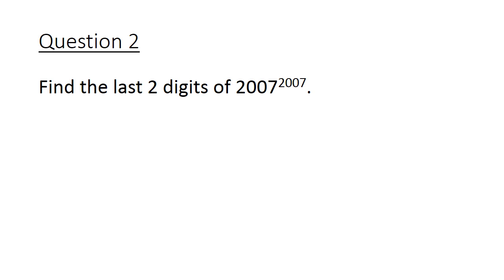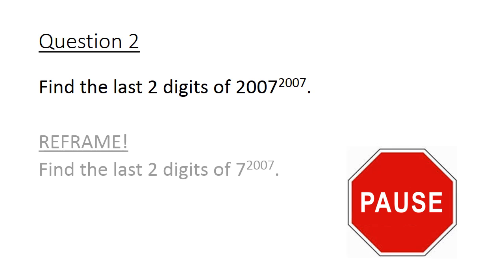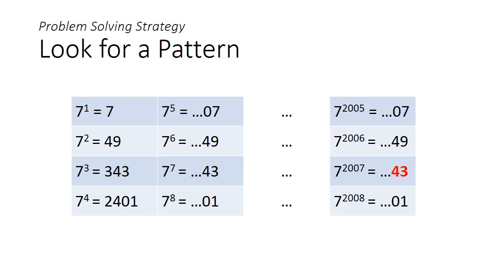So let's extend the question. What about the last two digits of 2007 to the power of 2007? I would suggest pausing the video here to see if you can apply the method used previously to attempt this question. Drawing the same line of reasoning from the first question, we can immediately reframe the question to look at just 7 to the power of 2007.